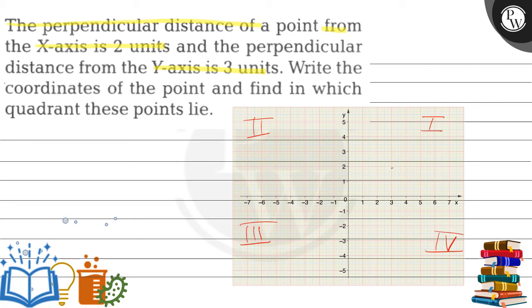Let's plot this point. The point here is 3, 2. If you can see, this point is in the 1st quadrant. The coordinates are 3, 2. The answer is 3, 2. The quadrant is 1st.